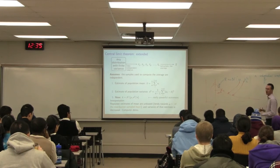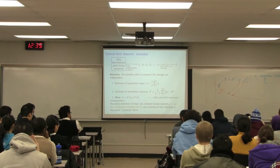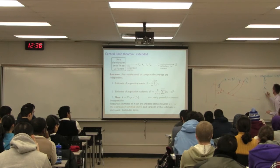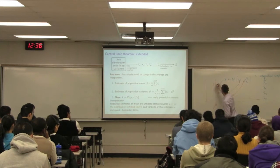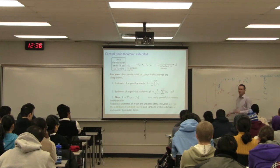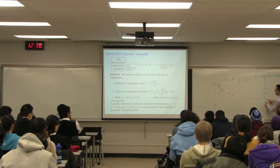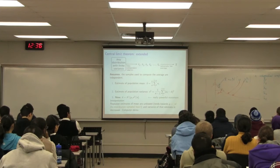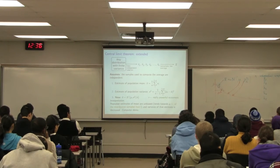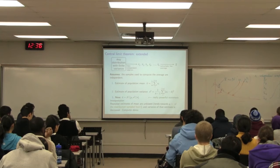Every time I calculate an x-bar, I'm going to get a different number. That's why x-bar comes from a distribution — a normal distribution. Every time I get a different x-bar, it's as if I had sampled from a normal distribution with parameters sigma-squared over n and mu. So there are two different distributions: the underlying distribution in orange which I don't know, and x-bar which comes from a normal distribution with the same mean but different variance, sigma-squared over n.